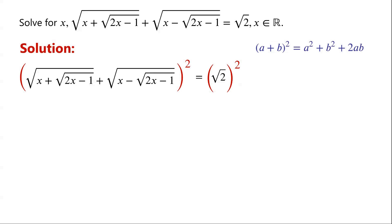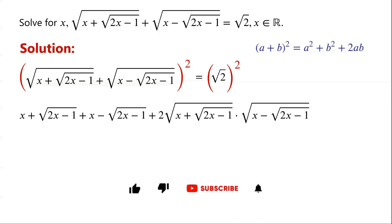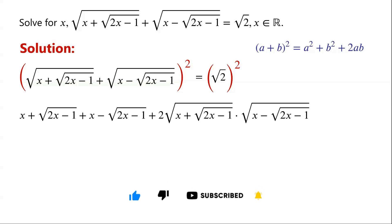By applying this, the left hand side of the equation is equal to: (x + √(2x−1)) + (x − √(2x−1)) + 2 times √(x + √(2x−1)) times √(x − √(2x−1)).